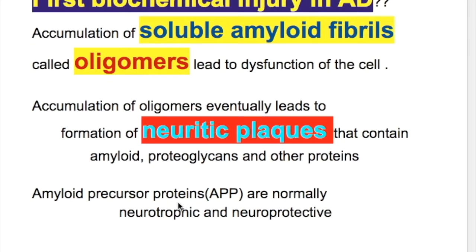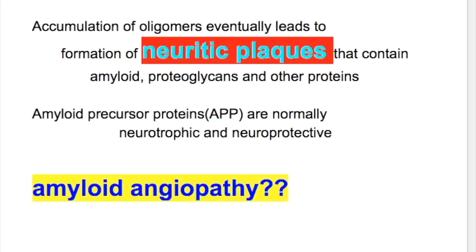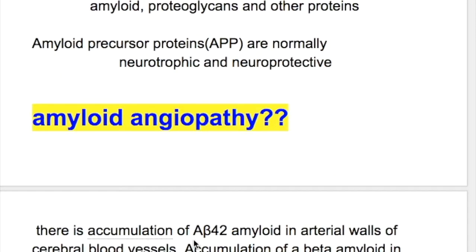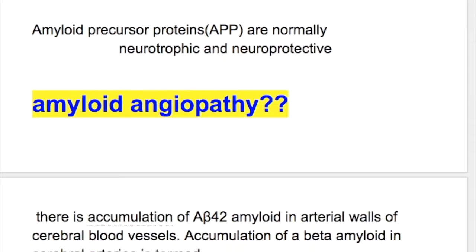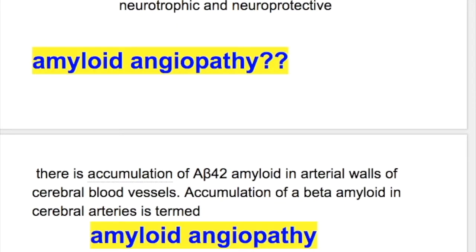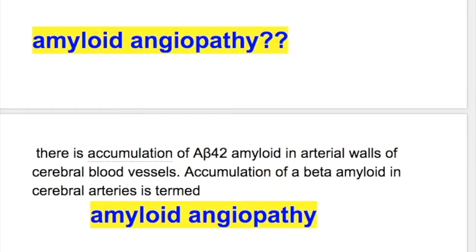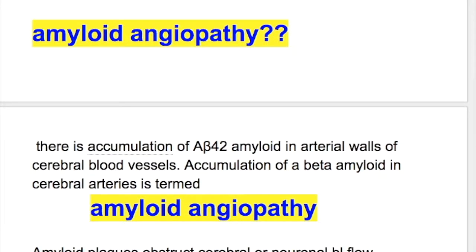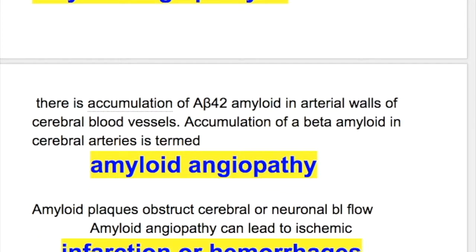Amyloid precursor protein (APP) is normally neurotropic and neuroprotective. Amyloid angiopathy refers to the accumulation of A-beta 42 amyloid in the arterial walls of cerebral blood vessels. Amyloid plaques obstruct cerebral or neuronal blood flow, and amyloid angiopathy can lead to ischemic infarction or hemorrhage.